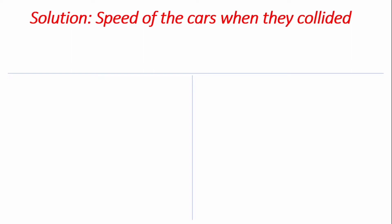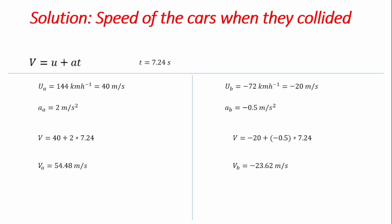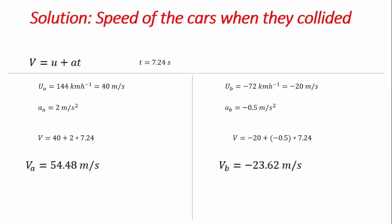Finally, to find the speed of the vehicles when they pass each other, we use the equation v = u + at with t equal to 7.24 seconds. For vehicle A, using initial velocity 40 m/s and acceleration 2 m/s², we get a velocity of 54.48 meters per second. For vehicle B, inputting its variables gives a velocity of minus 23.62 meters per second, where the negative sign indicates it is moving in the direction away from the positive x axis.